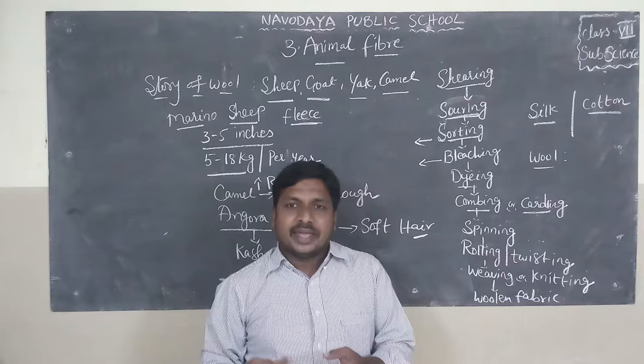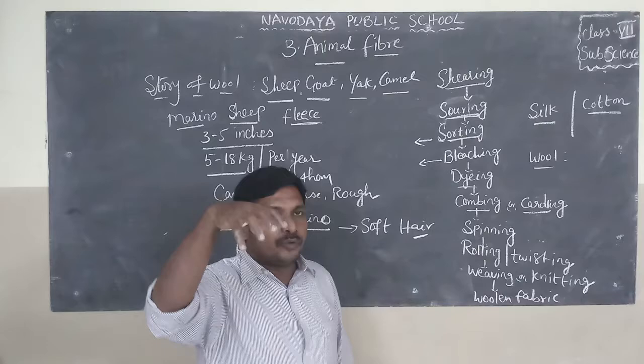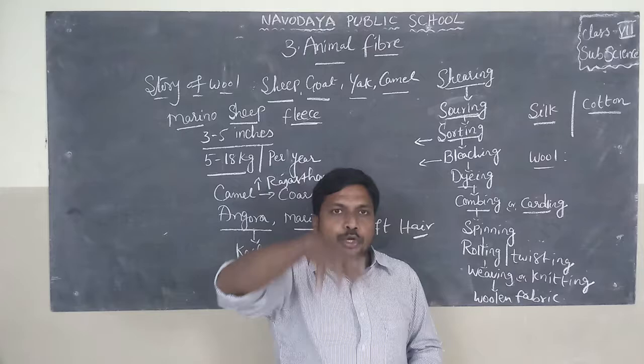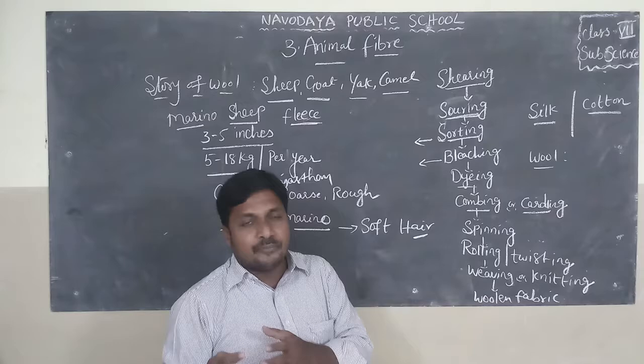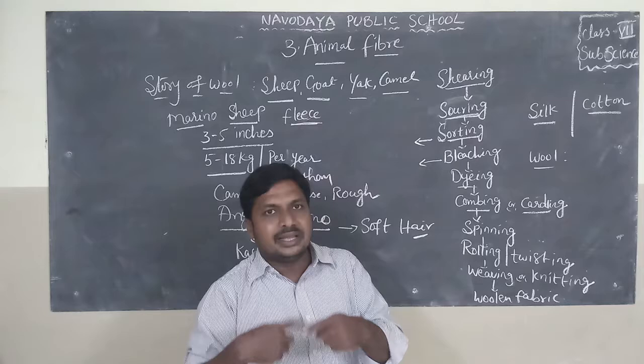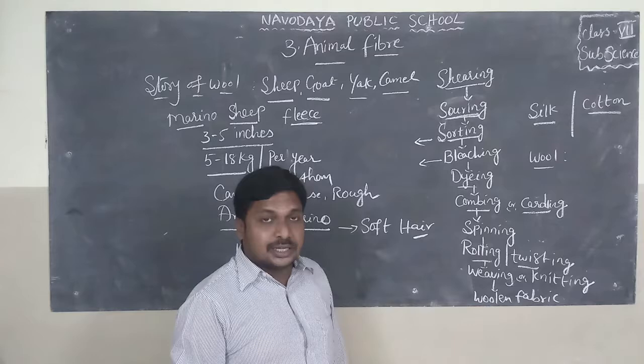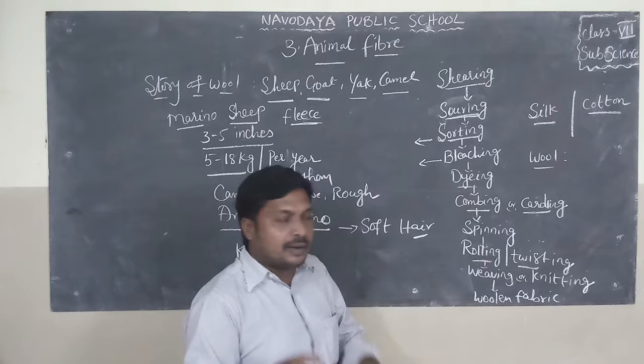Next is combing or carding. With the help of a special combing machine, the wool hair is combed. The combing machine contains different teeth, which helps to comb the hair and make it very soft. After combing, the thread is spun — that process is called spinning. After spinning, the thread is rolled or twisted with the help of rollers to form yarn. This yarn is then sent for weaving.